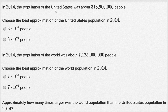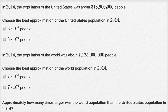In 2014, the population of the United States was about 318,900,000 people. Choose the best approximation of the United States population in 2014. So they say three times 10 to the eighth people or three times 10 to the ninth people. This is a big difference — a factor of 10. So which one's closer? If I were to round this to the nearest hundred million,